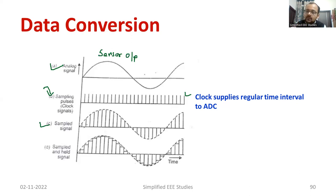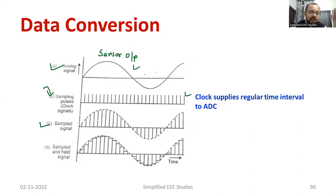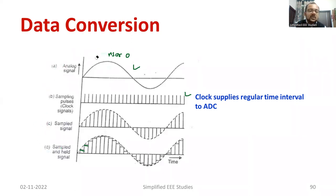Whenever one point is converted into digital form, the previous value should be held — so we require the sample and hold circuit. We will be getting the corresponding analog form. Corresponding to each analog segment, we should get the digital form, where one is a higher value and the other will be a lower value. This is actually called the sample and hold signal. This is the way how an analog signal is going to be converted into digital form.